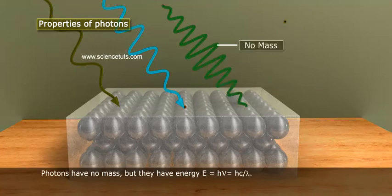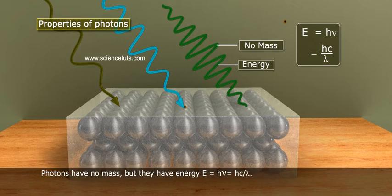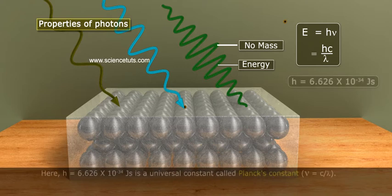Photons have no mass but they have energy. E = hν = hc/λ.